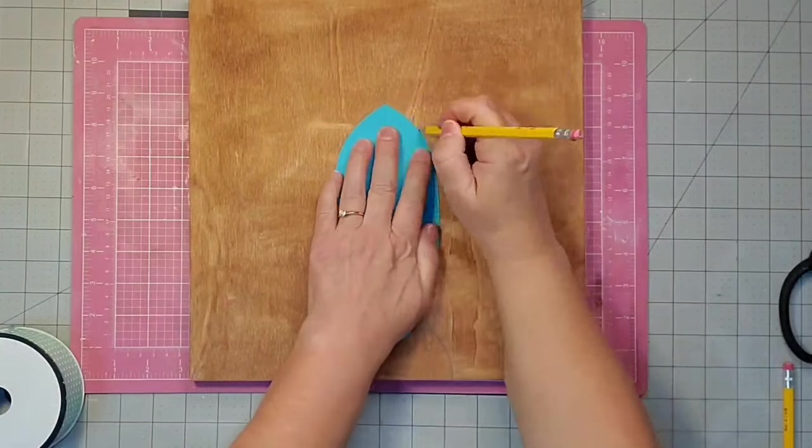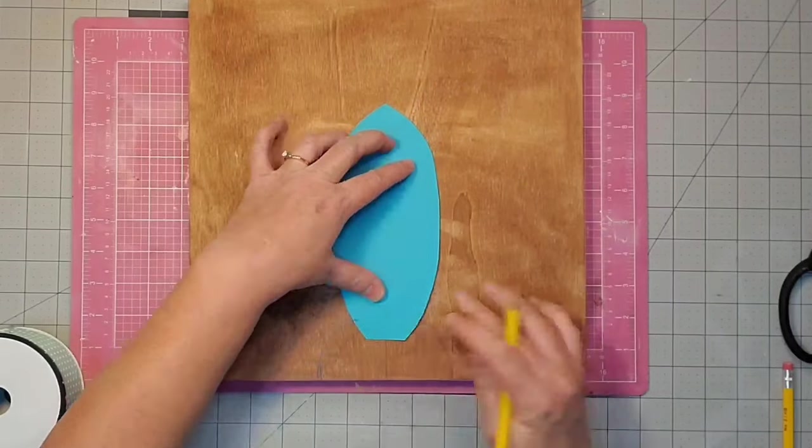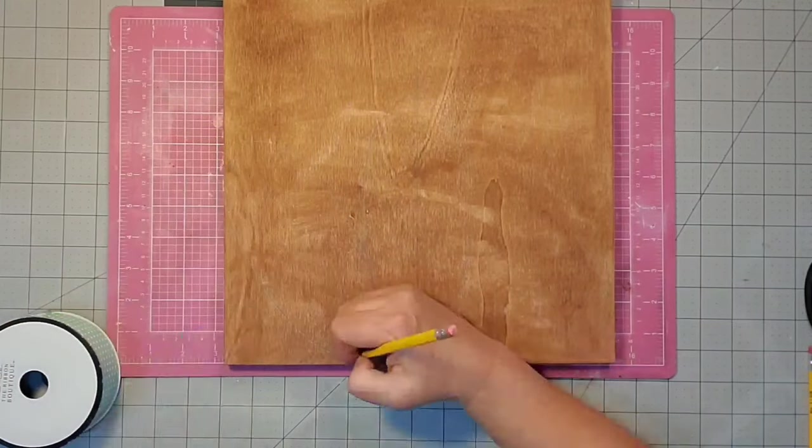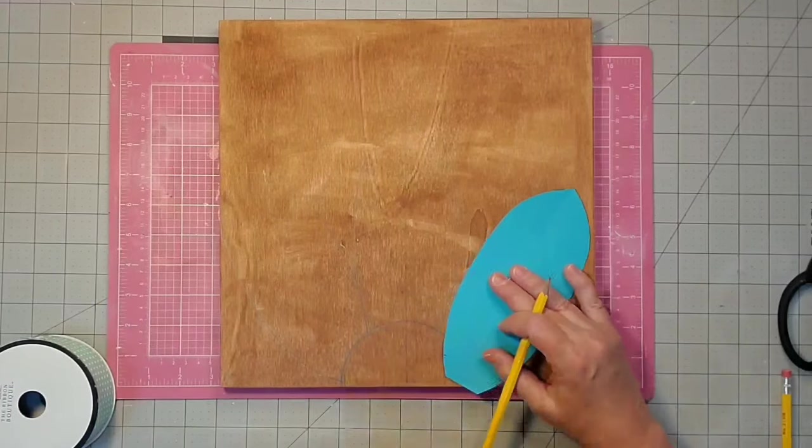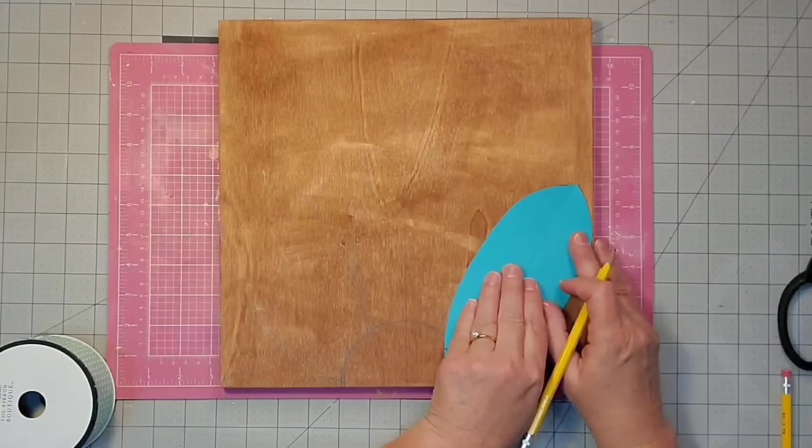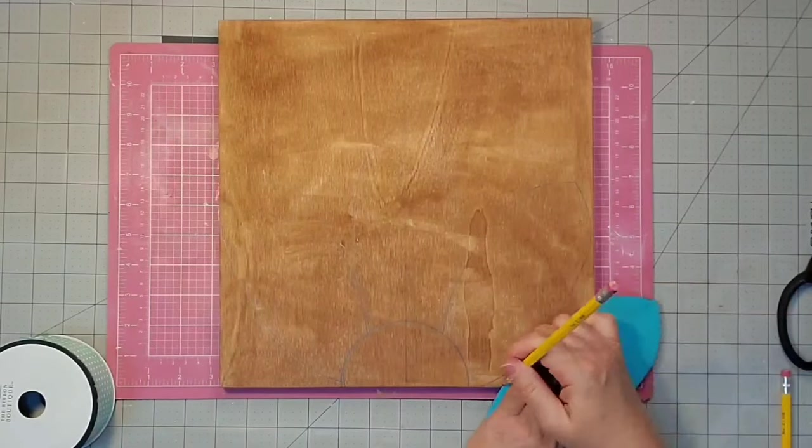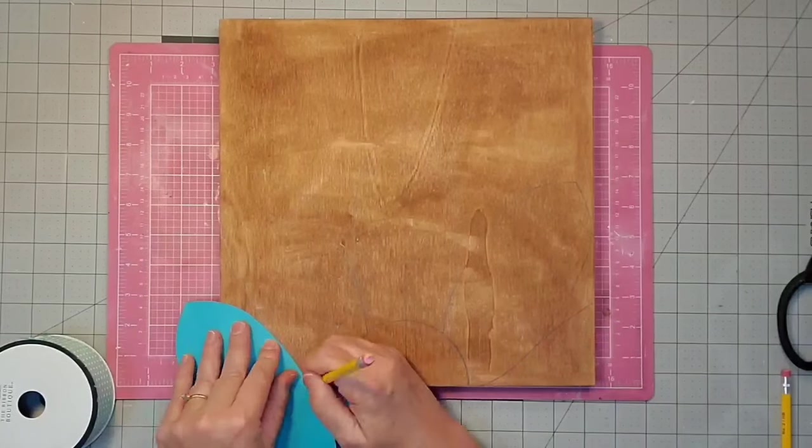I'm going to line up the center of my petal with the center of my board where I drew my guideline, and I'm just going to trace out my petals. Then I'll work my way around to the right and left, drawing petals onto my board. If you make a mistake, it's real easy to erase it with a white eraser and just correct it.